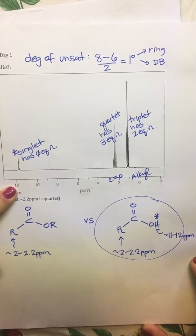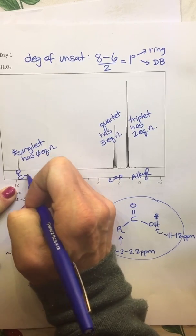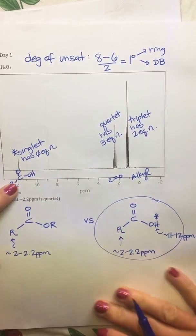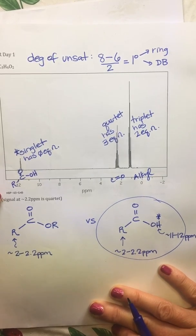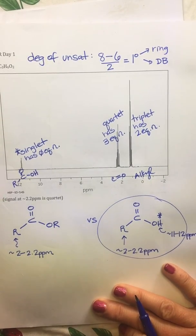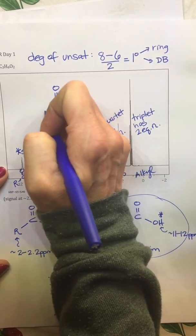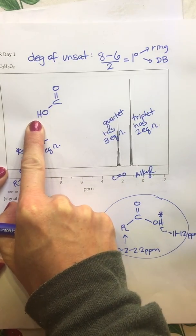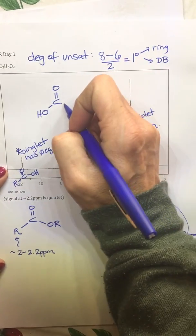And then of course labeling our chemical shift here, which we already talked about in the beginning, this is again our carboxylic acid hydrogen, very deshielded and exposed to that NMR magnet because of those two electronegative oxygens there. Now again, if you look at your molecular formula, we're only dealing with three carbons.